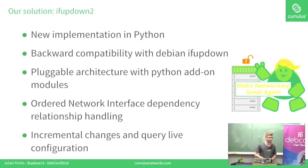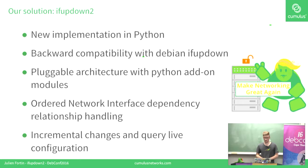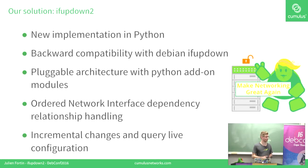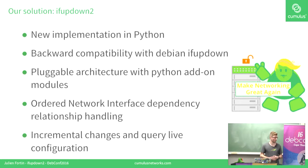Our solution is a backward-compatible re-implementation of IfUpDown in Python, with a pluggable architecture using Python add-on modules. You can add your own support or extend IfUpDown2 to support your own protocol. We also generate a graph of all the interfaces to resolve dependencies and relationships between them. We added capabilities to support incremental changes and query live configurations.